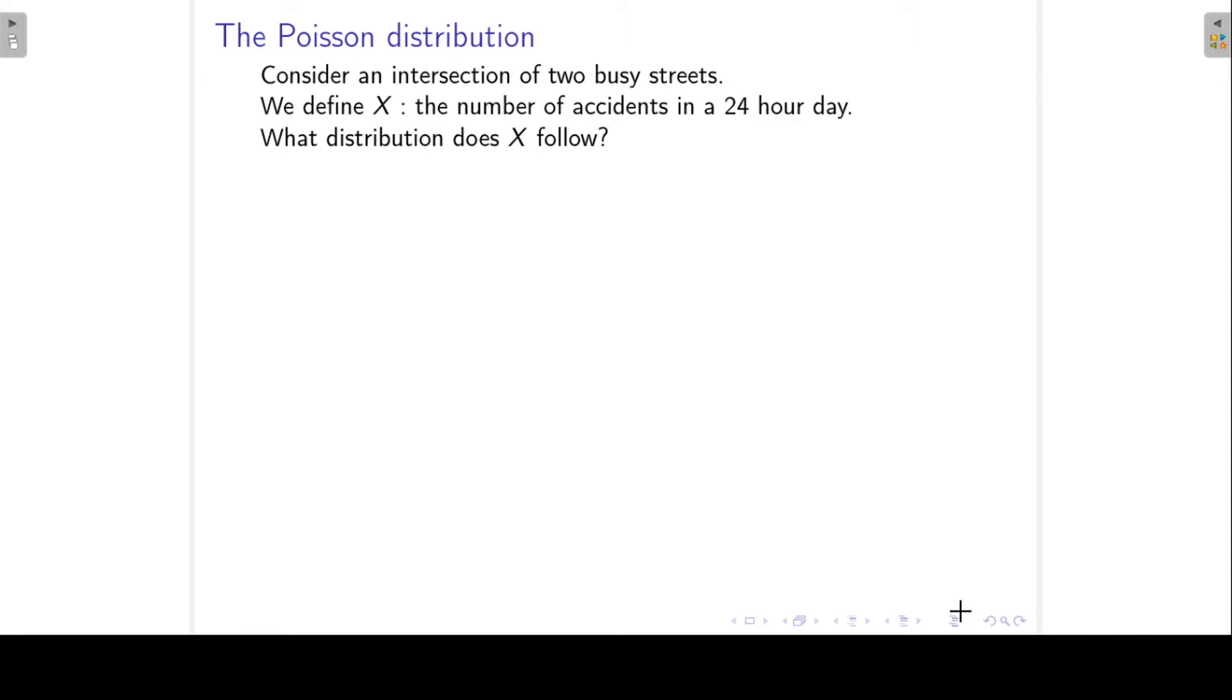Consider an intersection of two busy streets. If we define a random variable x as the number of accidents in a 24-hour day, then we can say that x follows the Poisson distribution.